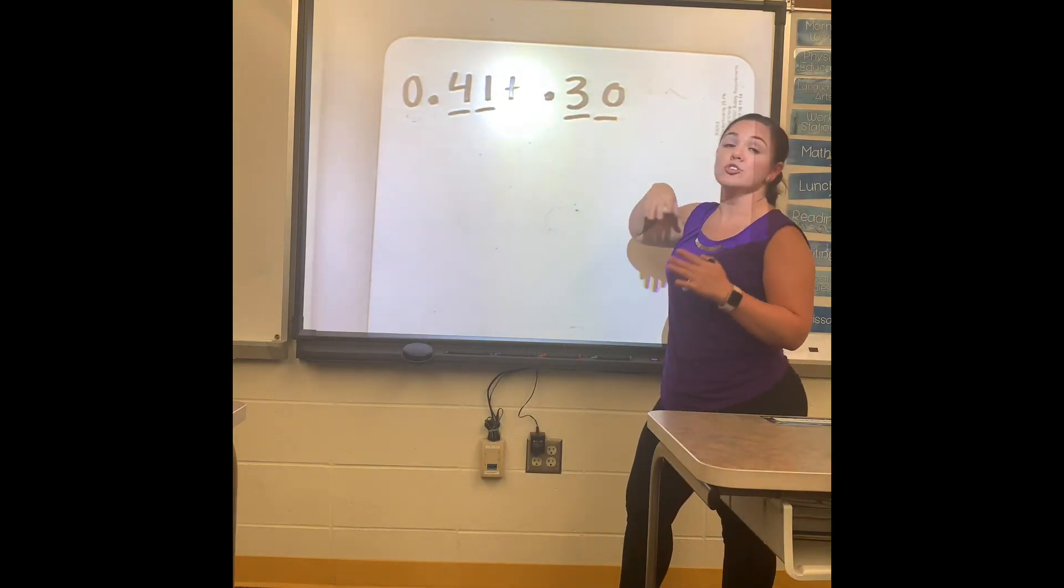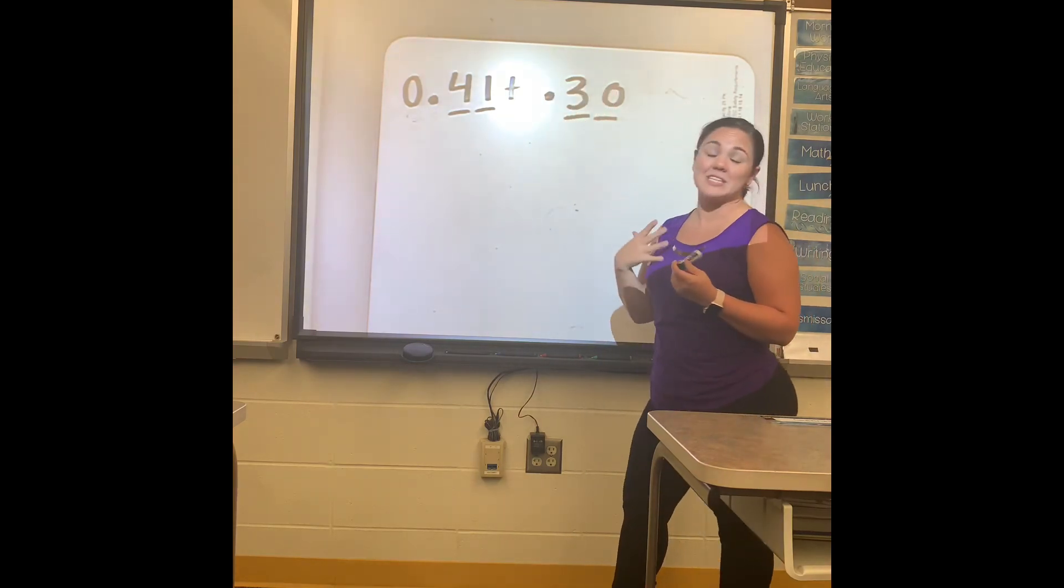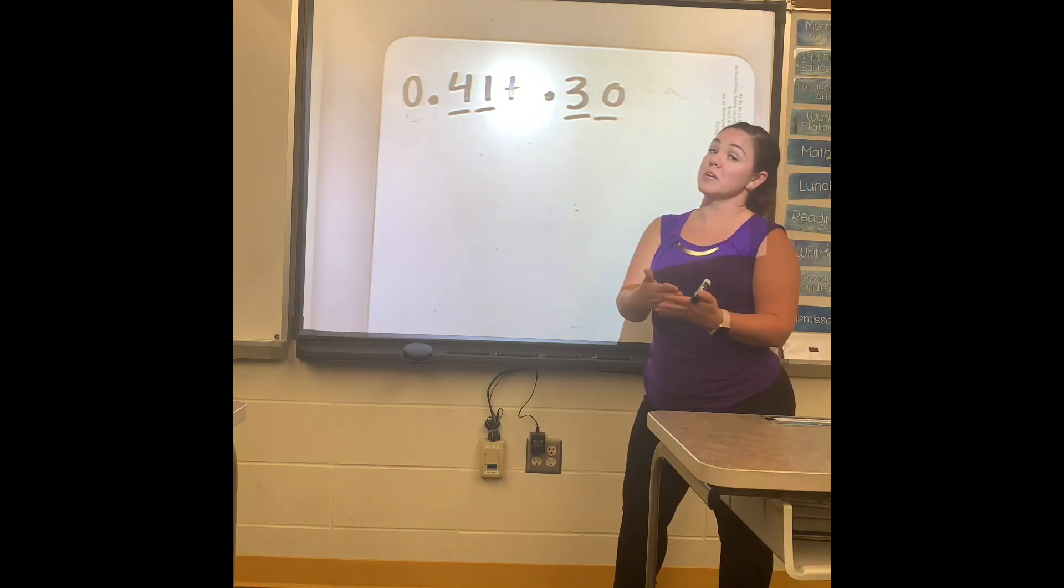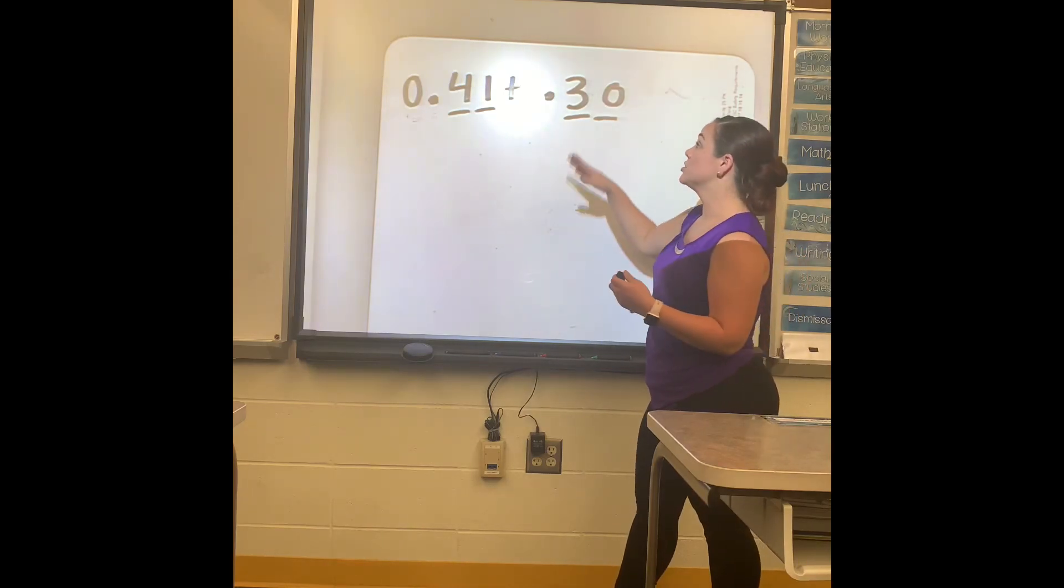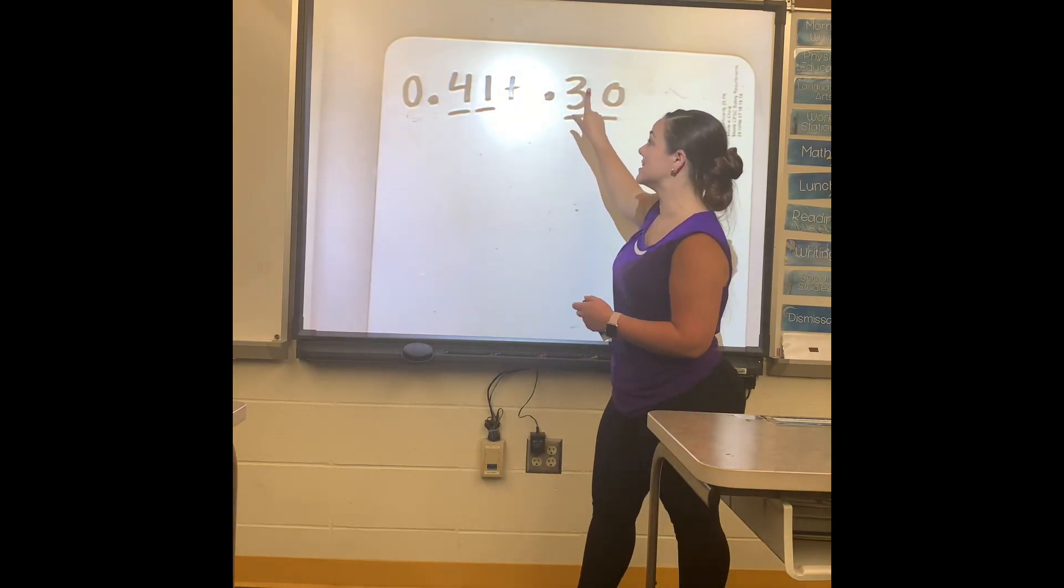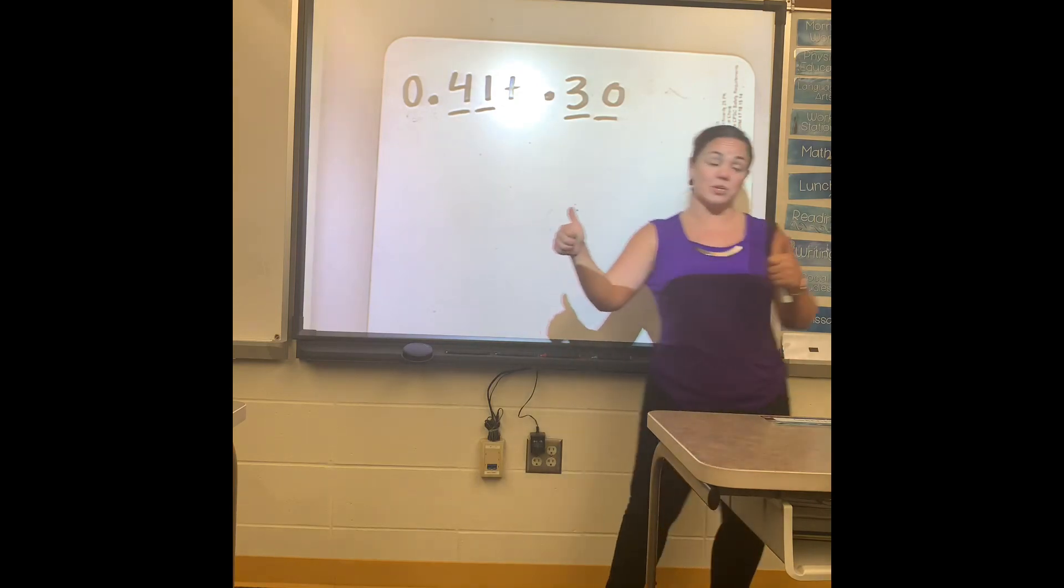So this is your ones and then you have your tenths and your hundredths. You need to make it into the hundredths because I always like to think of money. If someone said they have twenty-one dollars and point five, even if they forgot the zero that still means twenty-one dollars and fifty cents. So I always tell the students, make sure you always have two places after the decimal.